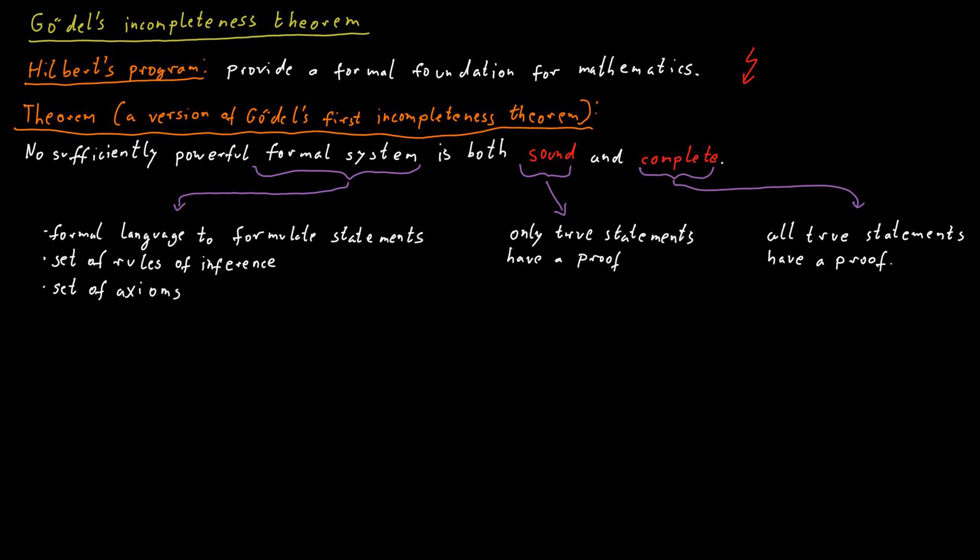So in a system that is sound and complete, we can prove all true statements and only true statements. We can prove all true statements because of completeness and we can prove only true statements because of soundness. So a statement is true if and only if it has a proof.